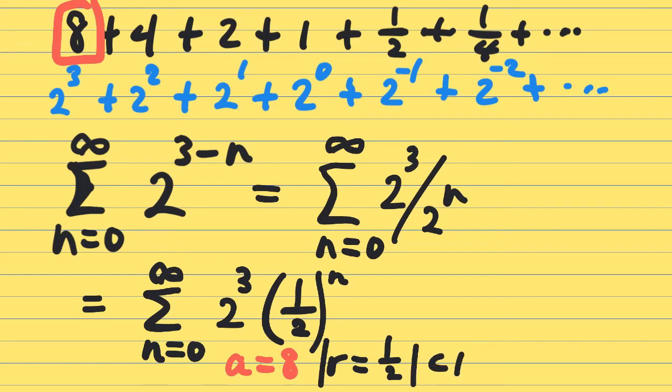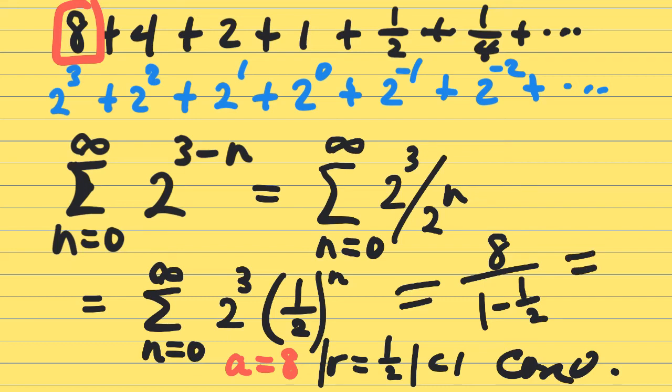That ratio's absolute value is less than one, so we have a convergent geometric series. And once we know it's convergent, the sum is A over one minus R, the first term over one minus the rate of change, which is eight over a half equals 16. So, that one was a hidden geometric series.